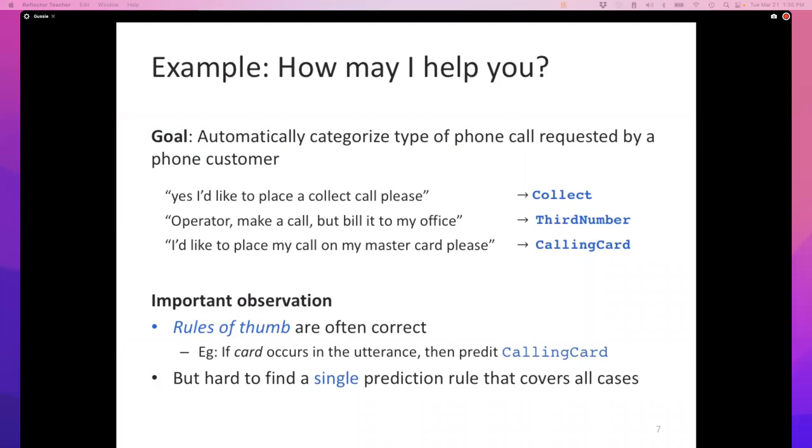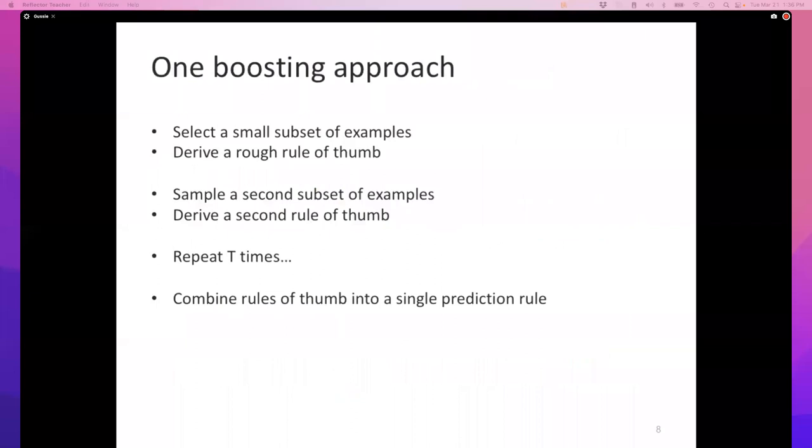I can invent these rules of thumb. If the word "collect" shows up, then it's collect call. You can imagine writing these rules of thumb, little Python programs that look at this input text and use some rules to route it appropriately. This is the kind of program one might write if someone doesn't know machine learning.